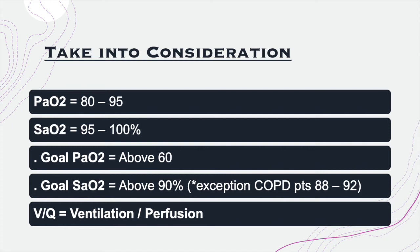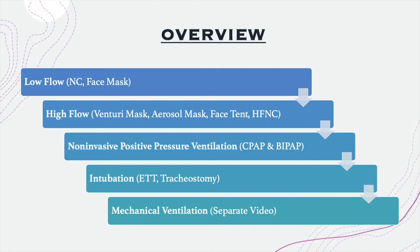Now for the main topic of this video: the oxygen hierarchy. When giving O2 to patients, we follow steps from lowest to highest, similar to analgesics — we don't jump straight to morphine; we start from Tylenol, then Oxycodone, then morphine. Similarly, we start with low flow oxygen therapy, then progress to high flow, then non-invasive positive pressure ventilation (NPPV), then intubation, and finally mechanical ventilation. If a patient is unresponsive to a given therapy — remaining hypoxic as evidenced by decreased SaO2 or PaO2 — we move to the next, more concentrated mode of oxygenation.